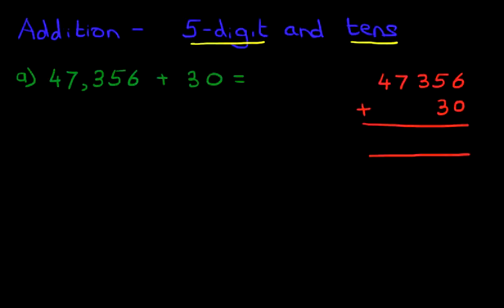Let's start with the addition. As always, we start with the column on the right-hand side first, the units. 6 plus 0 is 6. Next, we have the tens, which is 5 plus 3. 5 plus 3 is 8.